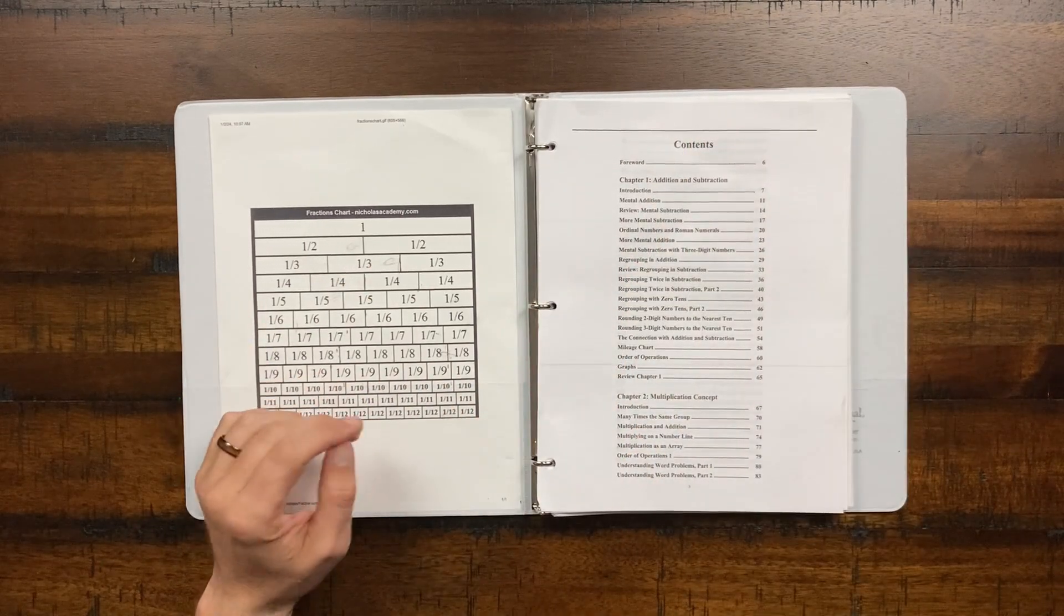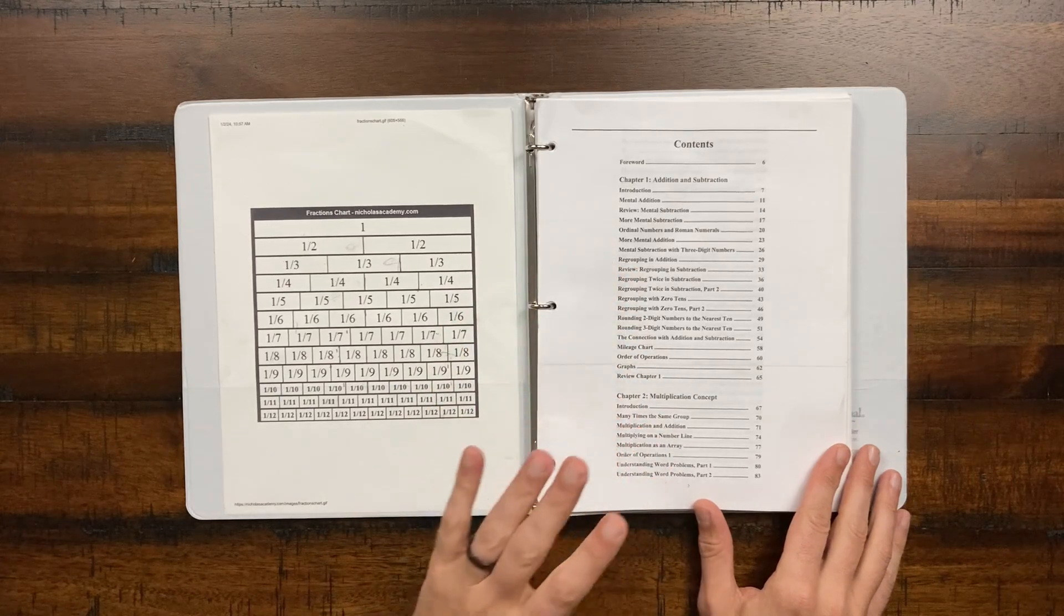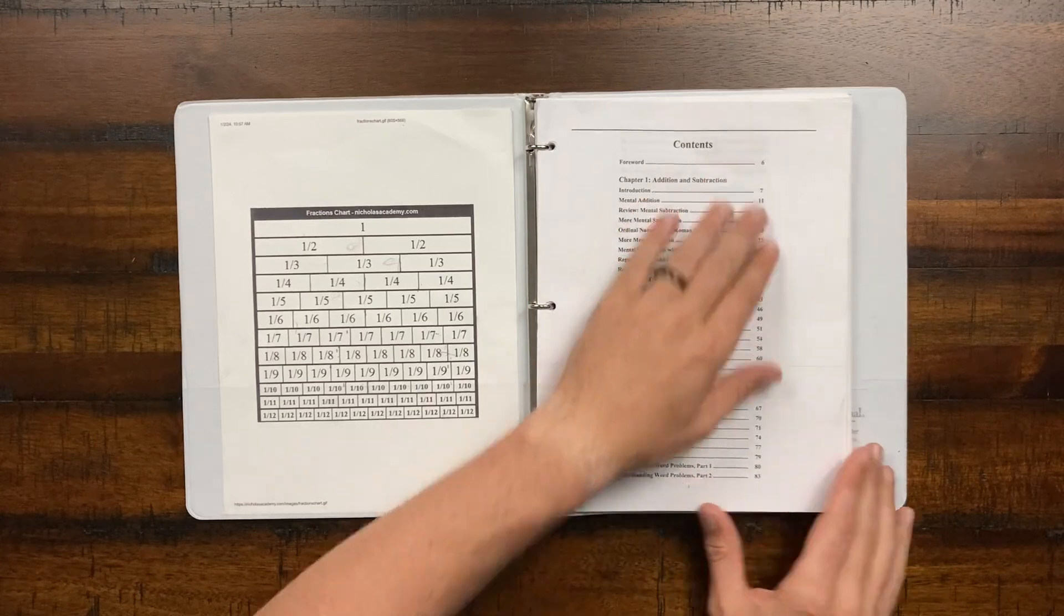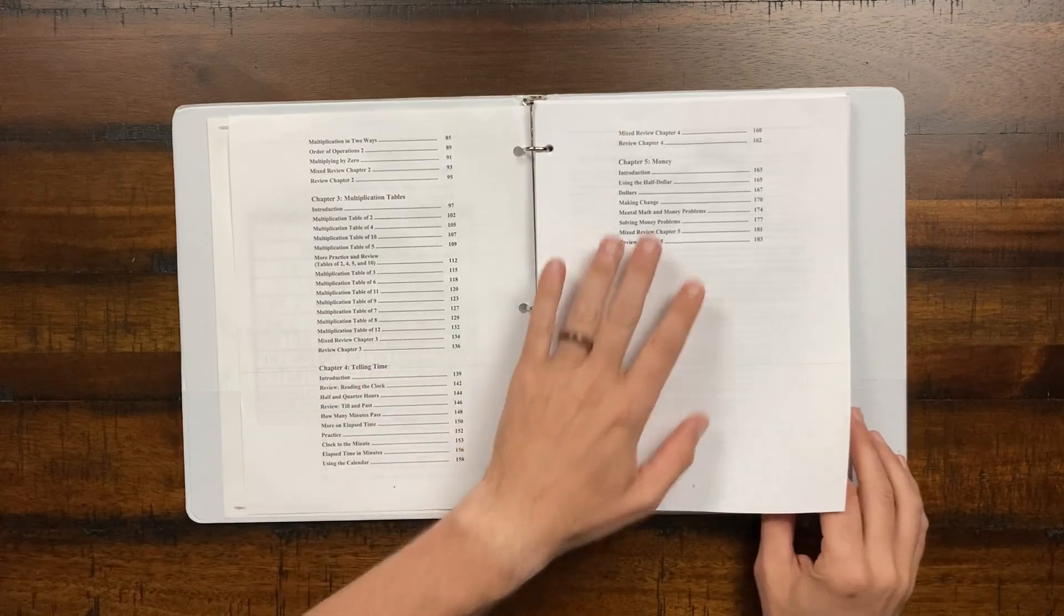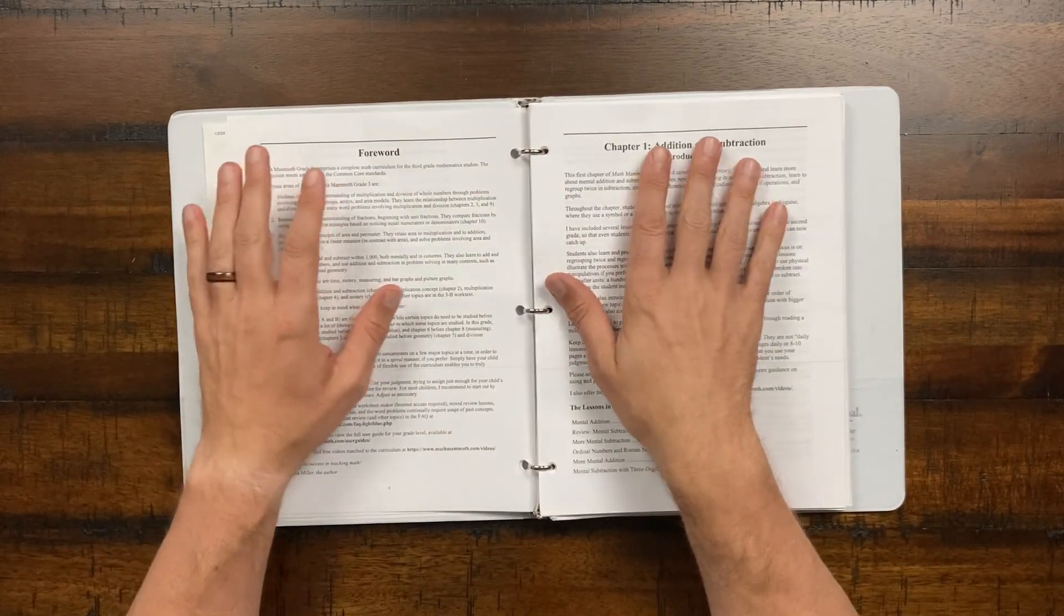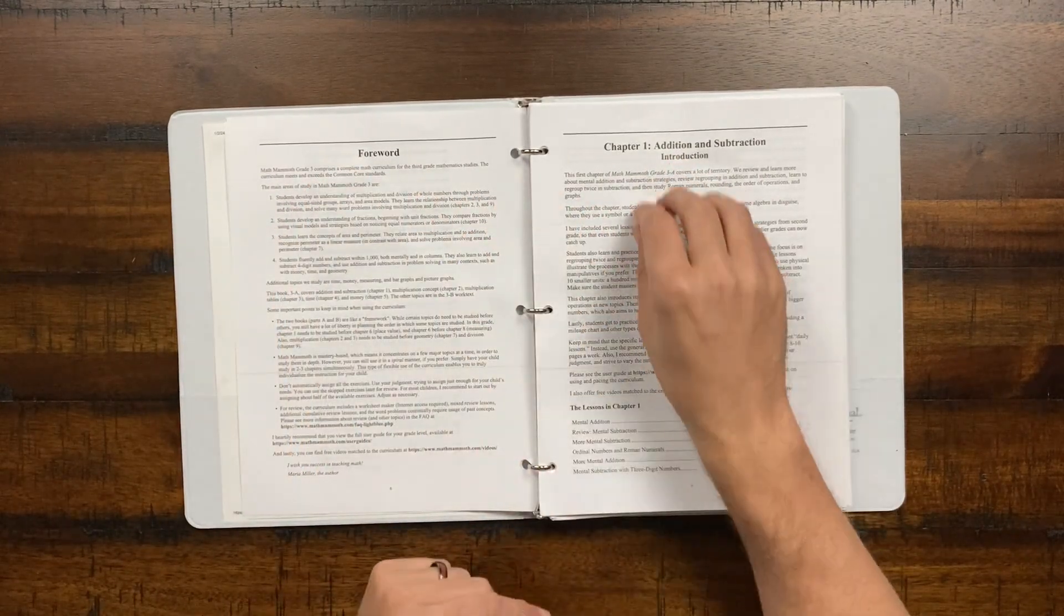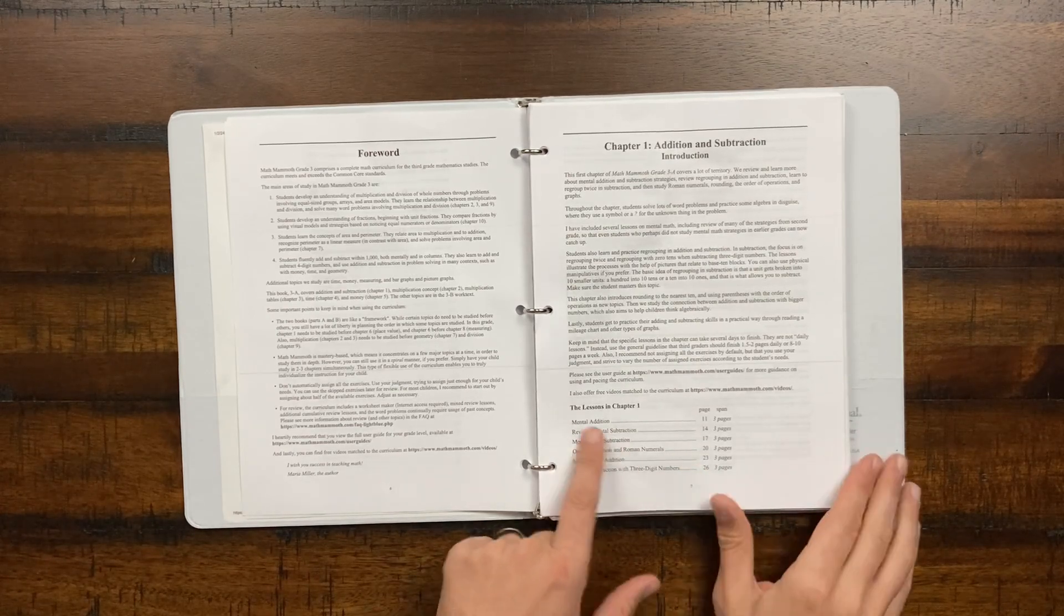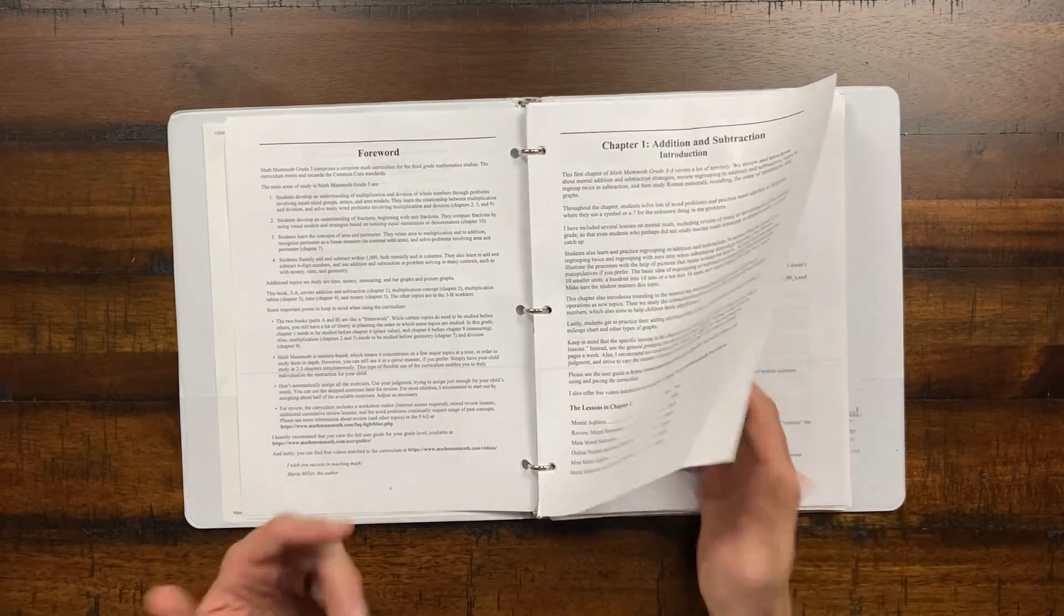At the beginning of every math mammoth curriculum, they do a nice layout of the chapters, what chapters are going to be covered and what the various concepts will be covered as well. You can see there's many sections within each chapter and the first book covers up to chapter five. There's in front of every single chapter, there's a nice forward. This was the forward at the beginning of the book. The beginning of each chapter is a nice layout of all the concepts you're going to be covering as well as a further layout of what concepts are being taught and how many pages those concepts cover.